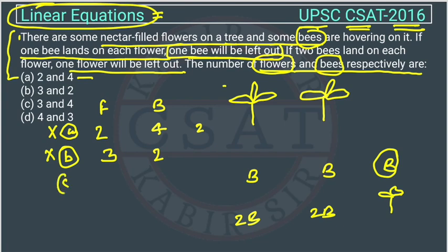Option C: there are three flowers and four bees. We allot one bee to each flower, and one bee is remaining. So the first condition is getting fulfilled.